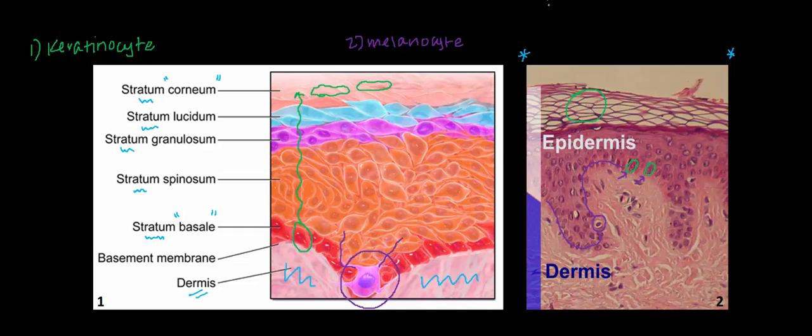With that histology mini lesson, the big takeaway point is that if skin cancer originates from a keratinocyte, we simply call it keratinocyte carcinoma. Simple enough, right?